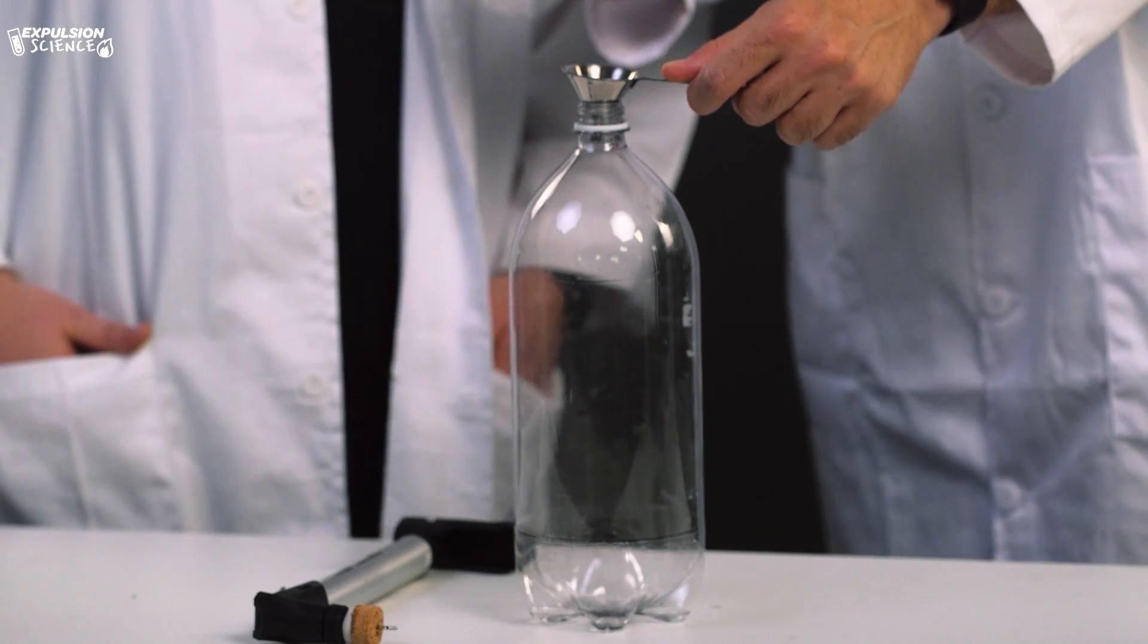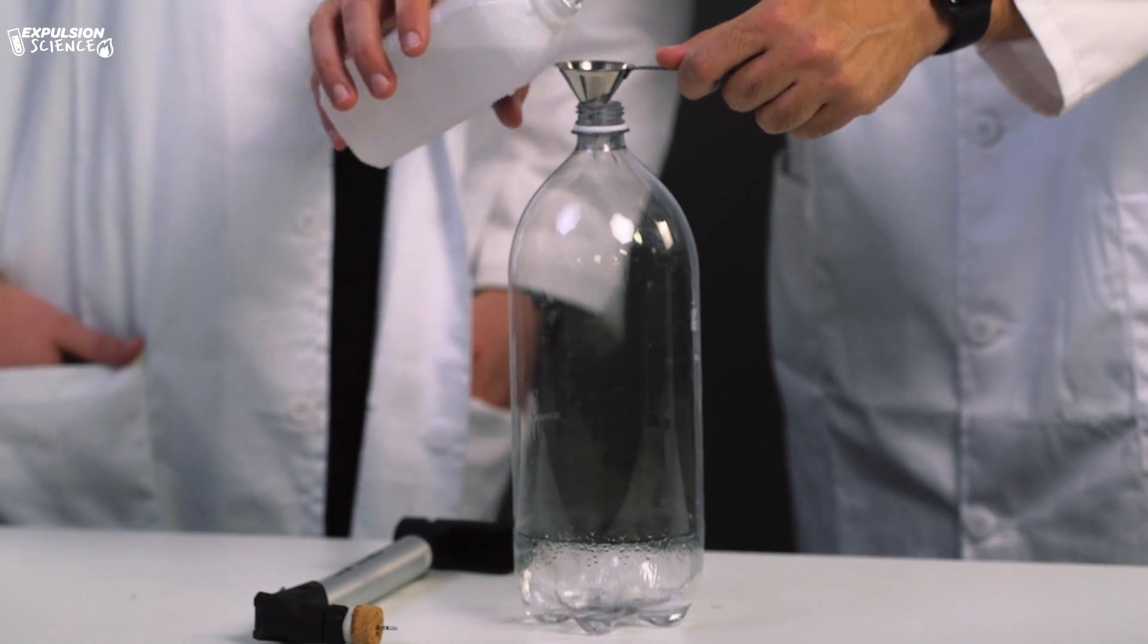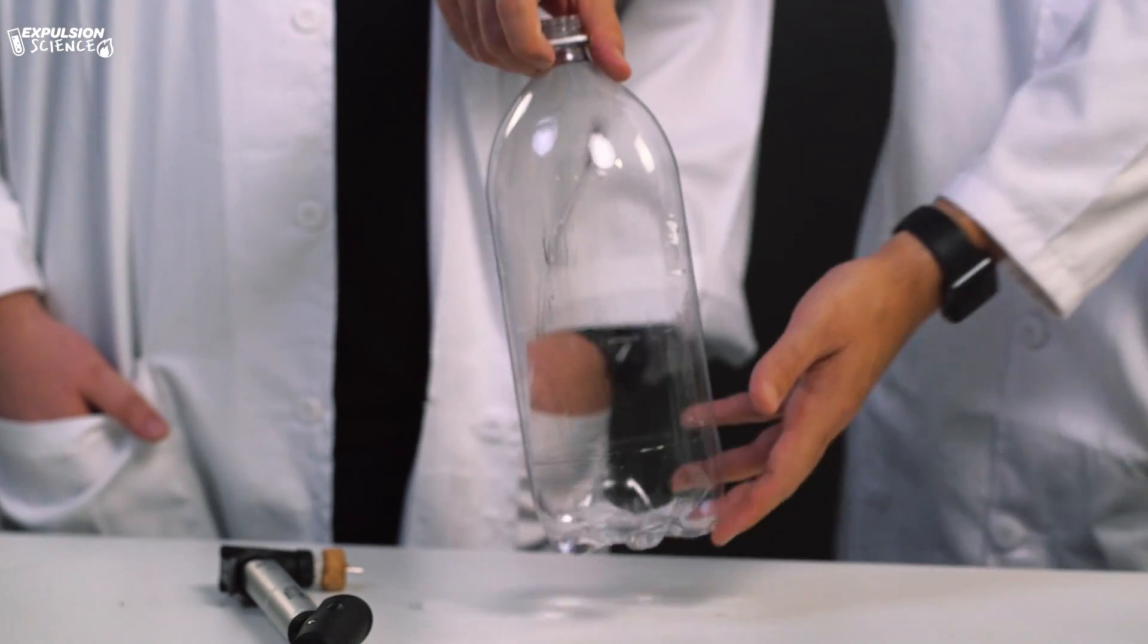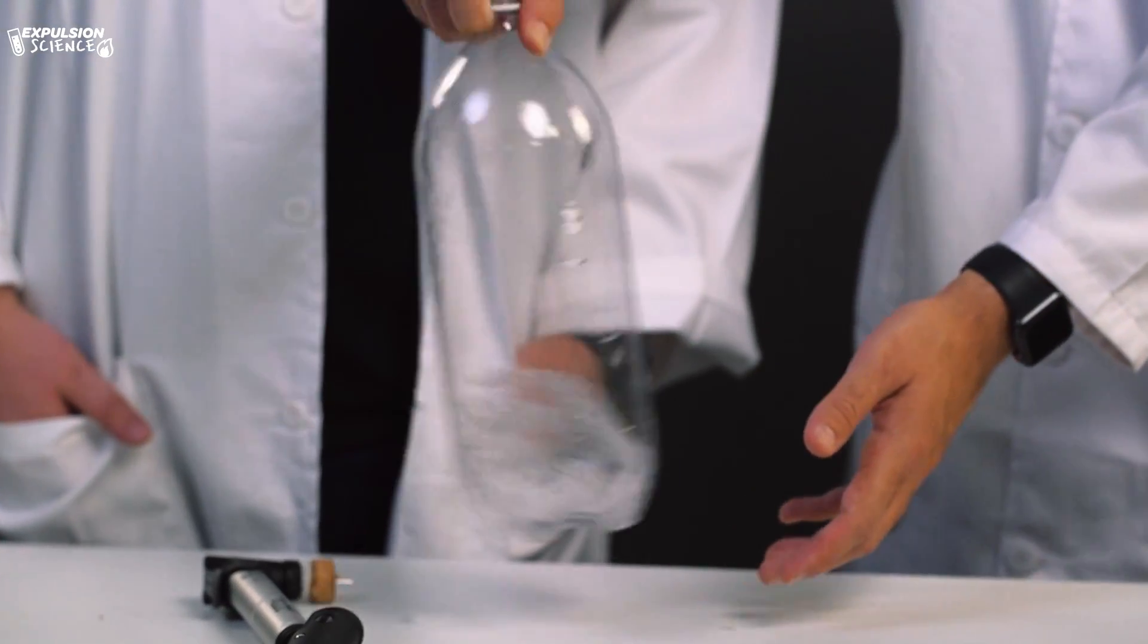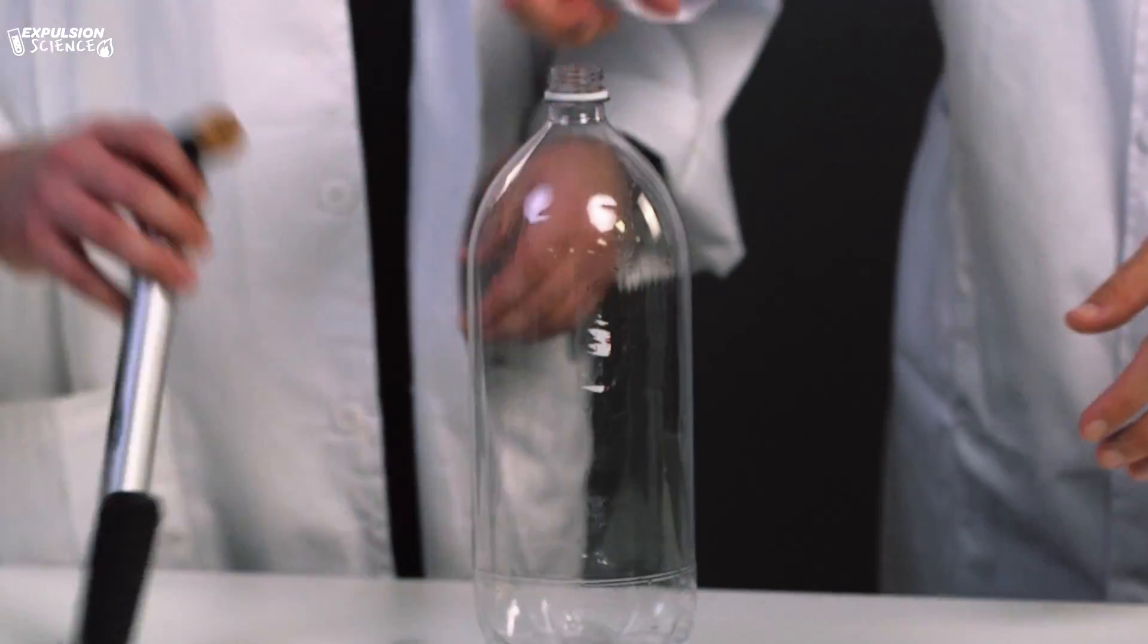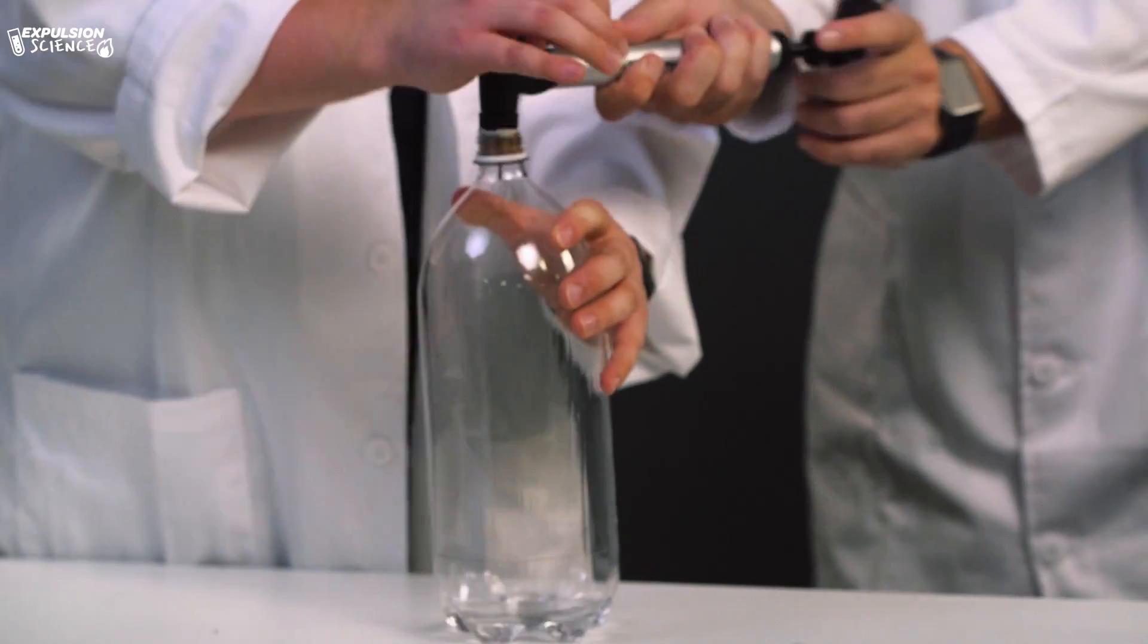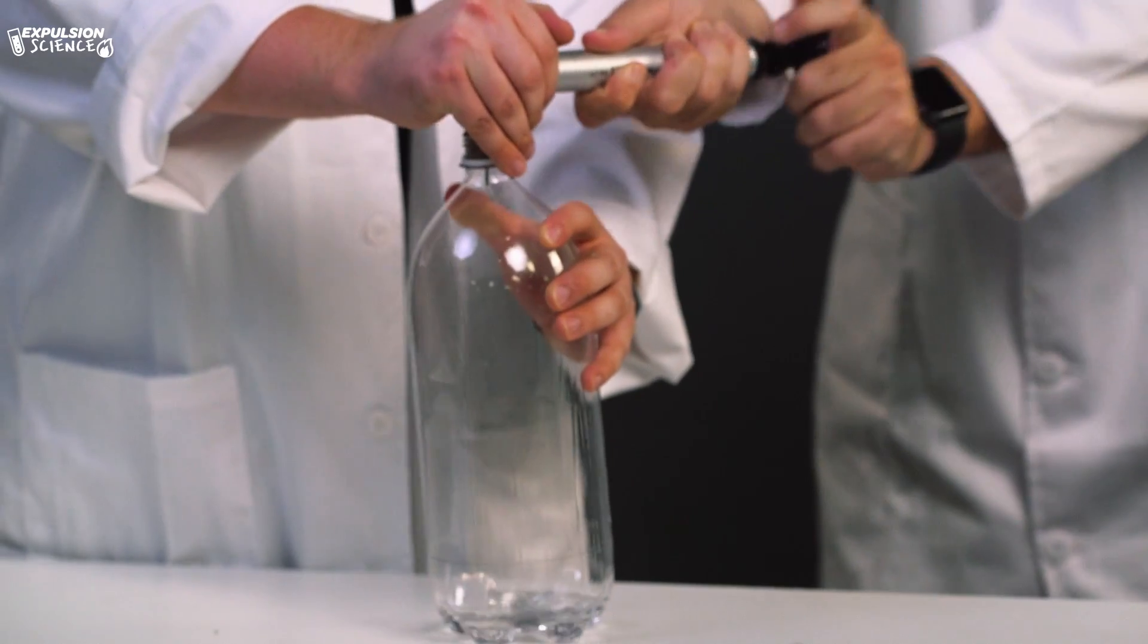Then we're going to take our rubbing alcohol and our funnel, and we're going to want to coat at least the base of the bottle in rubbing alcohol. So not too much, but you need at least a good amount. We've got to coat the bottle as much as we can in the rubbing alcohol. Okay, now it's time to get pumping. I'm going to pump it up about 20 to 40 times.